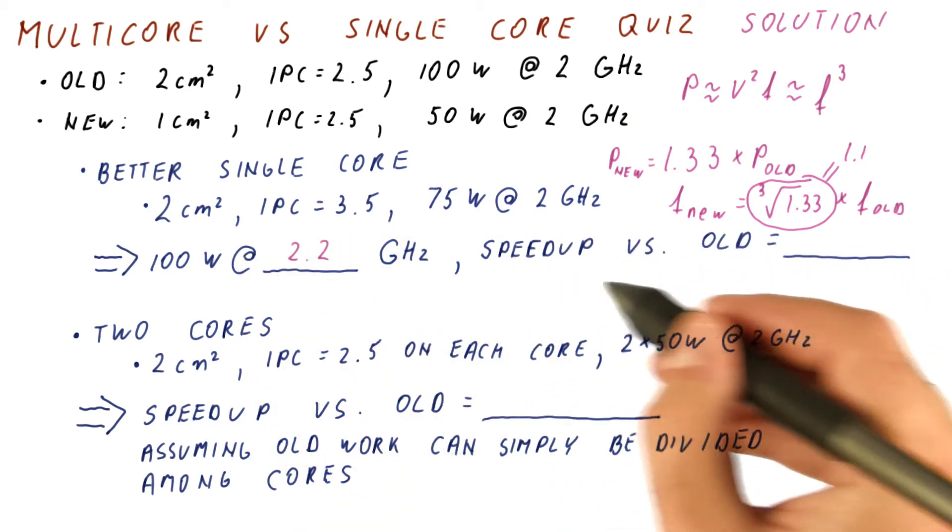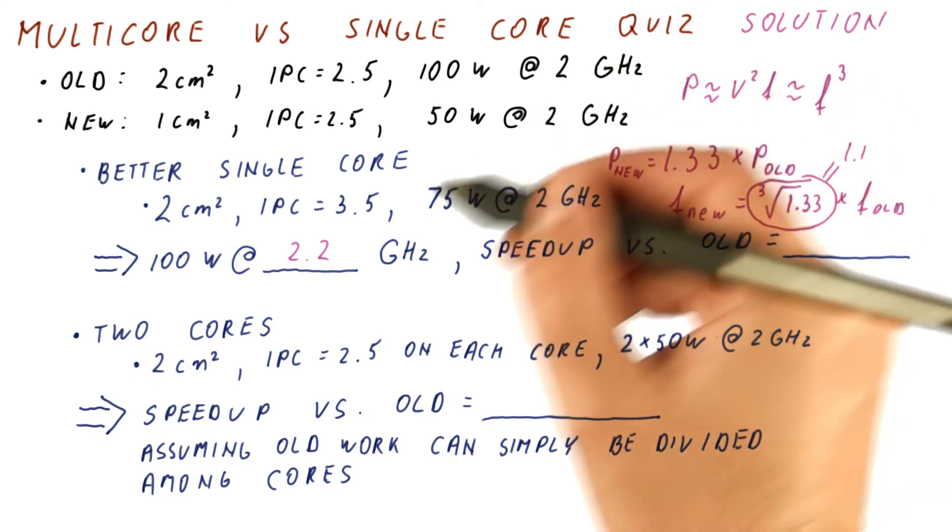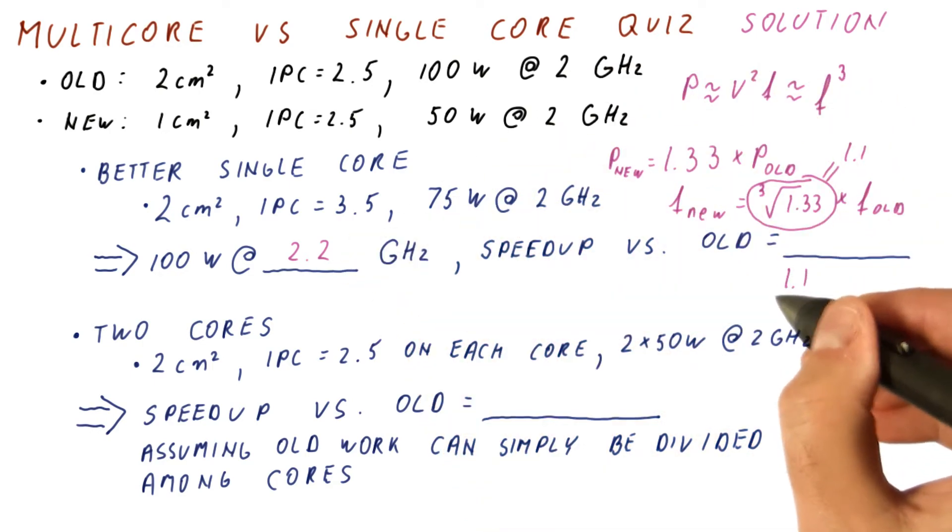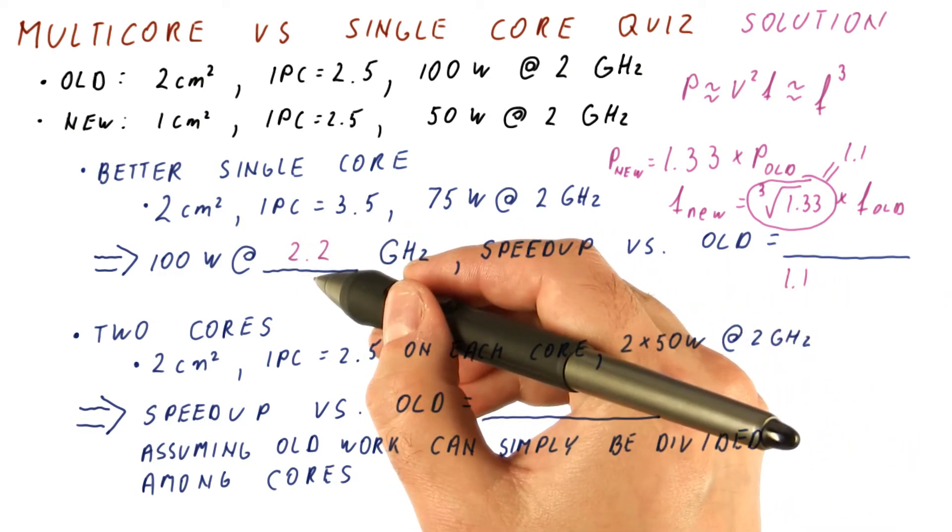The speedup we achieve versus the old technology will be the speedup we achieve because of a shorter clock cycle time. And that speedup is 1.1 times. So we are 1.1 times faster now in terms of clock frequency.